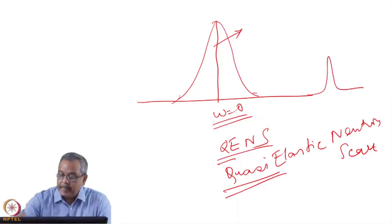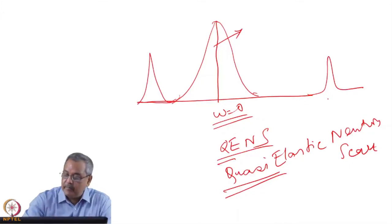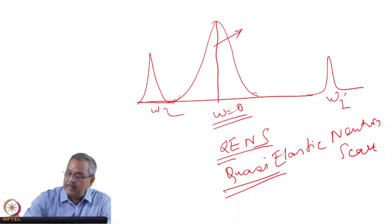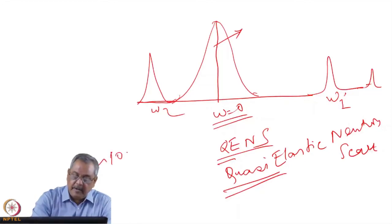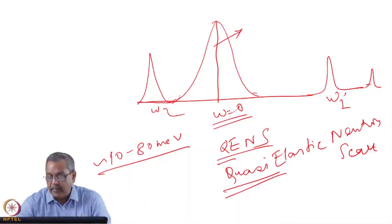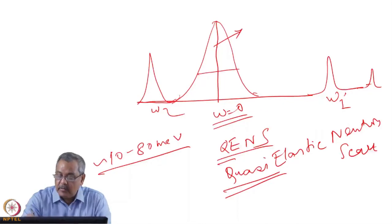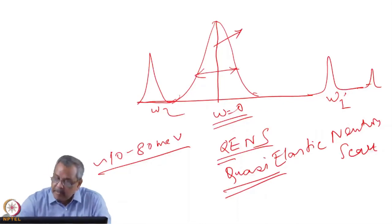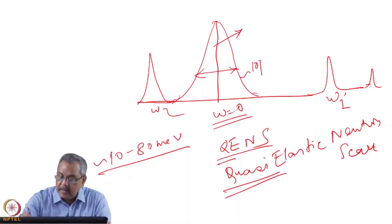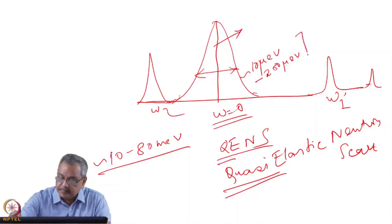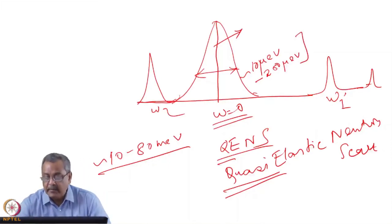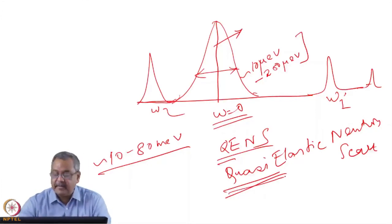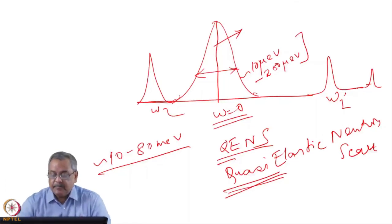You have inelastic intensities far away from ω=0. There can be contributions at ω₁, ω₂ and others — phonons, for example, involve energy transfers of the order of 10 to 80 millielectron volts. But for incoherent scattering from self-diffusion of a particle, it just broadens the elastic peak, and we measure this broadening. This broadening is typically 10 to 200 microelectron volts, depending on the energy resolution of the instrument. This broadening of the elastic line is why it is called quasi-elastic neutron scattering.